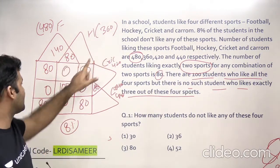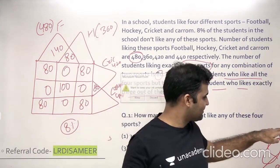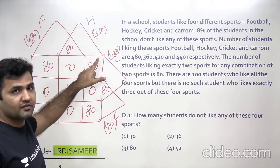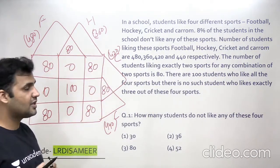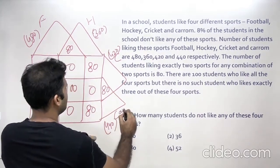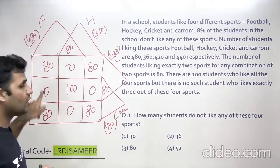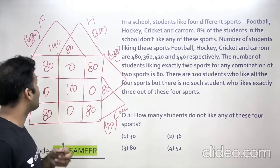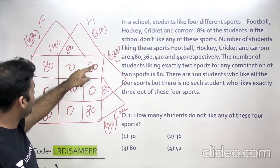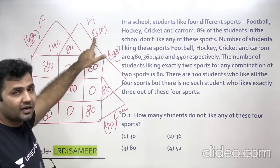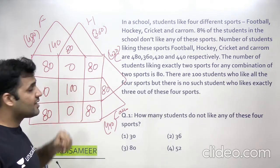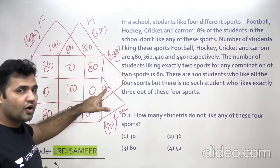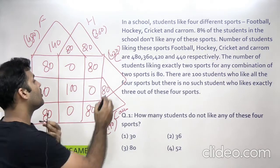For hockey, the total is 360. Subtracting 80 + 80 + 80 = 240, plus 100 = 340. The remaining students are 20, so only hockey equals 20. For cricket, the total is 420. Subtracting 340, this value will be 80. For carom, the total is 440. Subtracting 340, you are left with 100 students belonging to only carom.